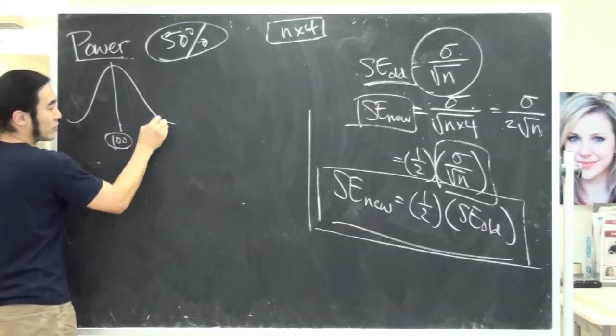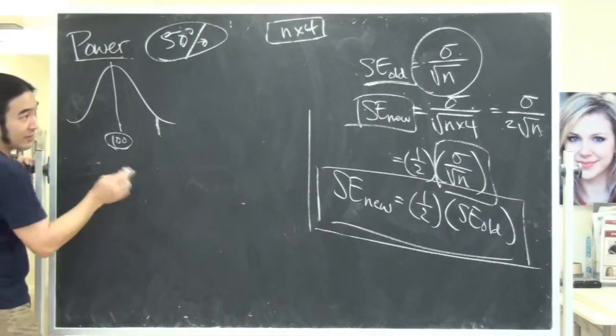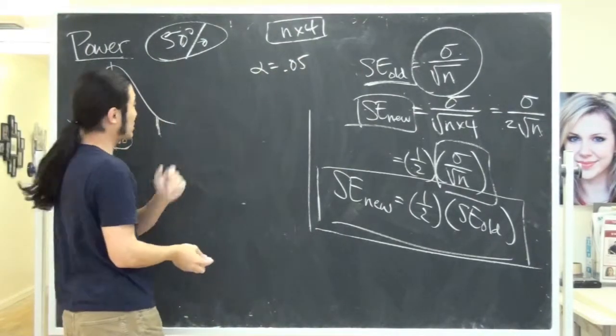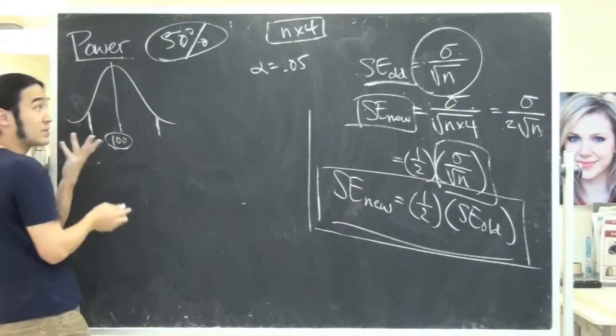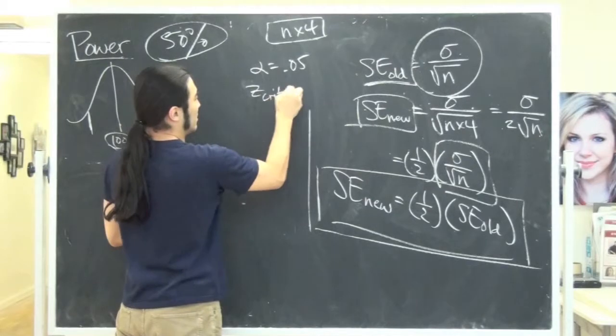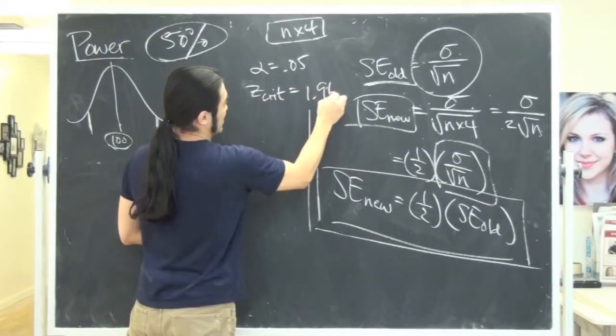And then, here's your crit value. Right? For an alpha, oh, let me give us an alpha. Let's say the alpha is 0.05. If the alpha is 0.05, and let's assume it was a two-tailed test, then the Z crit would be 1.96. Okay?